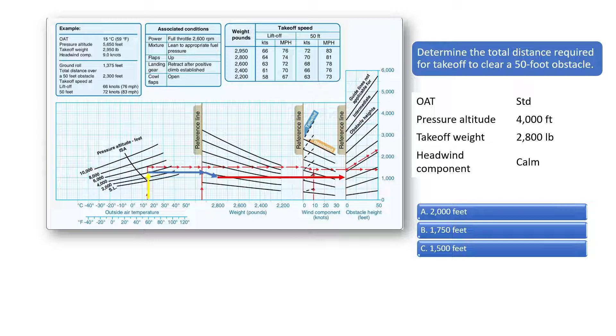Follow the line upward since we need to find the takeoff distance needed to clear a 50-foot obstacle. This is illustrated by the orange arrow in the chart. You can see the approximate takeoff distance required of 1,750 feet since it is about halfway between the 1,500 and 2,000 foot lines on the right side of the chart.